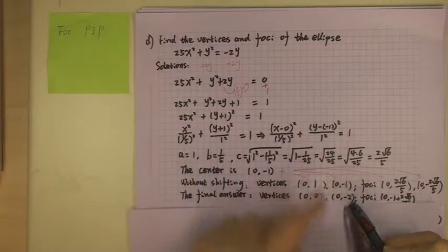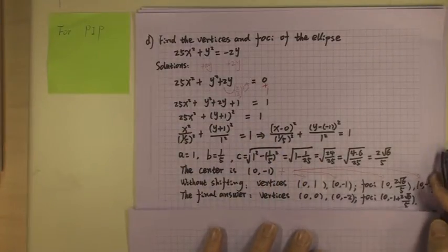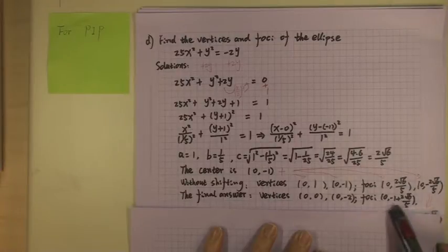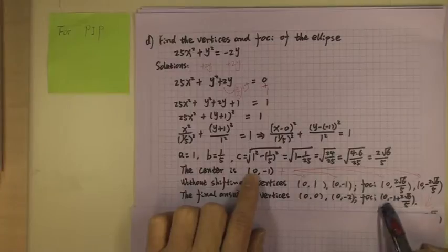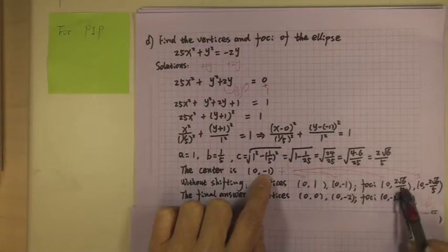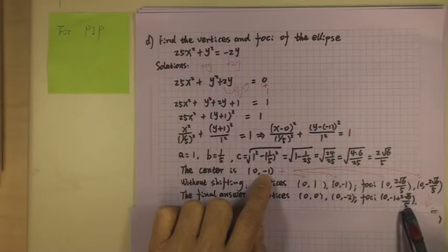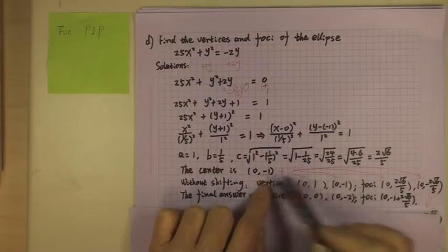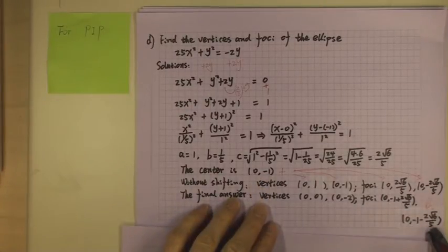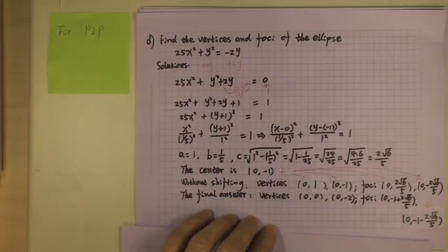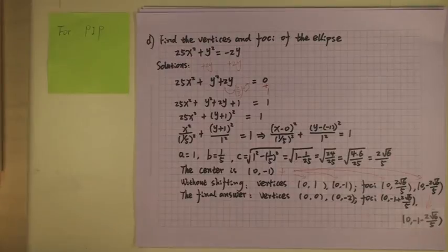The ellipse is in the vertical direction. We do the same for the foci: 0 plus 0 gives 0, and negative 1 plus 2√6/5 gives the focal coordinate. So the foci are (0, negative 1 ± 2√6/5). That is the final answer for Example D. I'll see you next time with more examples.